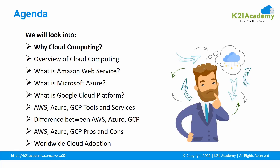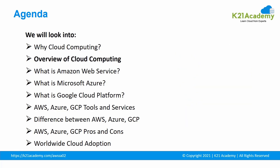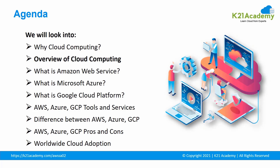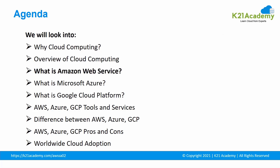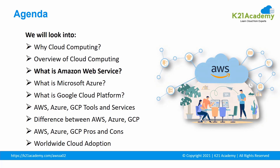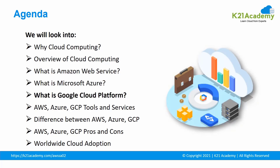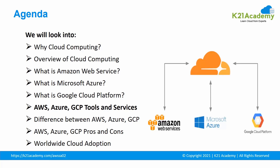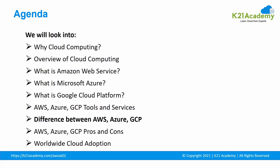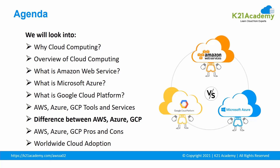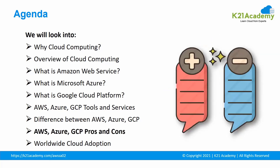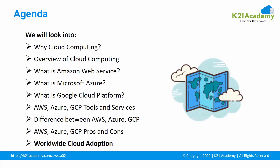Firstly, we will see why cloud computing and what is the actual need of cloud computing, followed by an overview of cloud computing, then what is Amazon Web Service, what is Microsoft Azure, what is Google Cloud Platform, and after that AWS, Azure, and GCP tools and services. Then the actual difference between AWS, Azure and GCP, some pros and cons, and finally we will see worldwide cloud adoption.